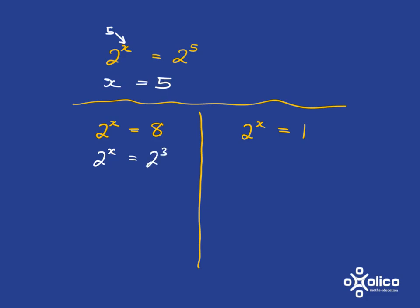And so now what do we have to put in place of x so that this and this are exactly the same? Well, obviously we have to have x is equal to 3.